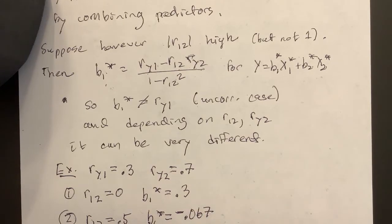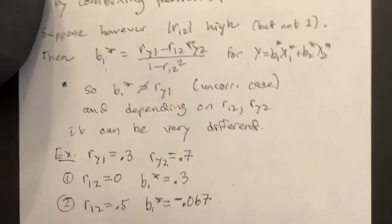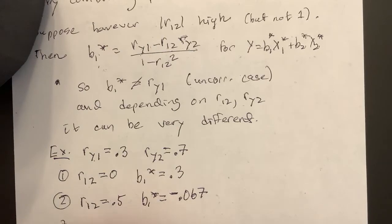So B1 star went from 0.3 positive to a slight negative, near zero, but slight negative. Okay, if you keep going, you can see it's going to get more negative now. Let's just do a couple others.